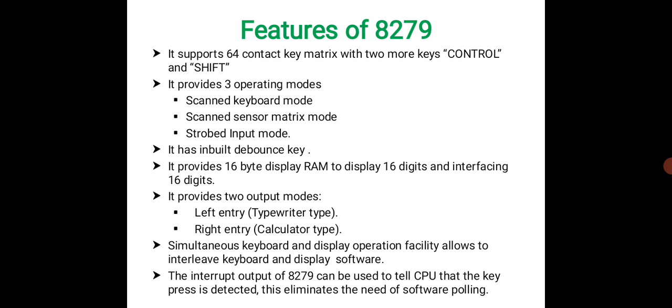Before we go into the detailed description of 8279, let's see the features. It supports a 64-contact key matrix with two additional keys: control and shift. It provides three operating modes: scanned keyboard mode, scanned sensor matrix mode, and strobe input mode. It has an inbuilt debounce key.